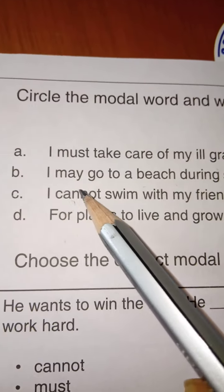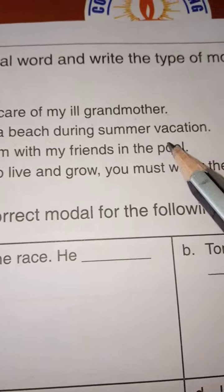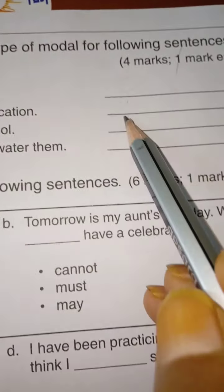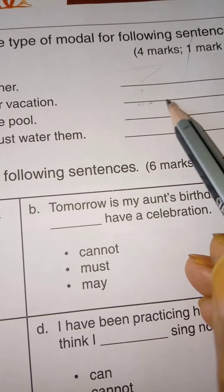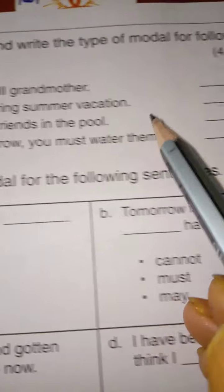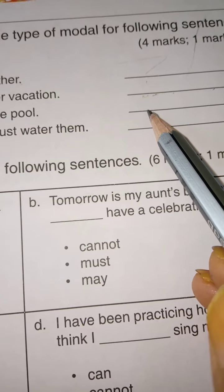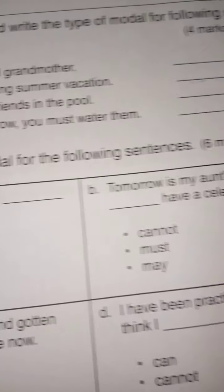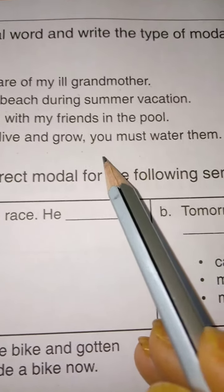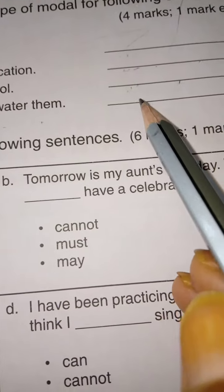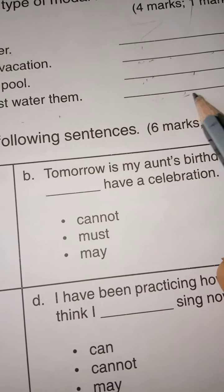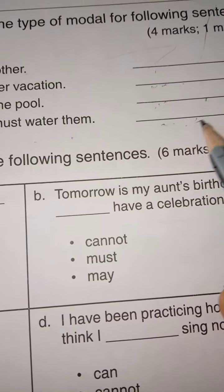Then, second one. I may go to a beach during summer vacation. I may. So, it is showing the possibility. So, you write here, possibility. Third. I cannot swim with my friend in the pool. It is showing the ability that he cannot. You write ability. For plants to live and grow, you must water them. This is necessity. If you give water, then only plant will grow. You write necessity. These are the types of modal words.